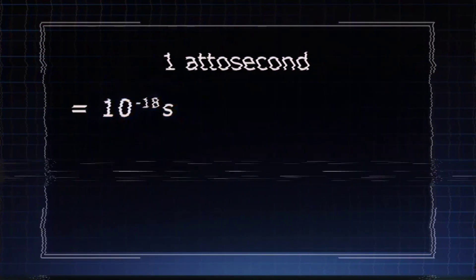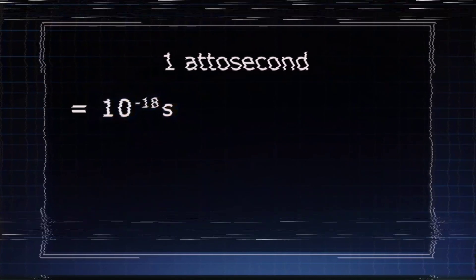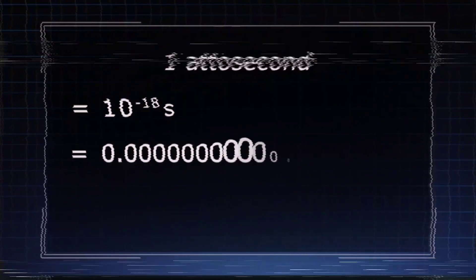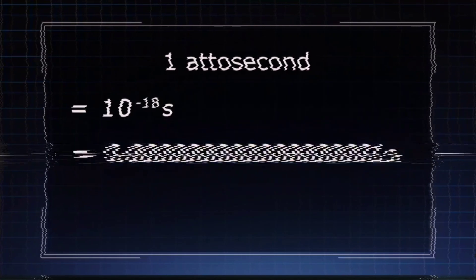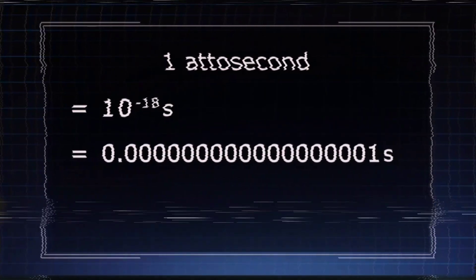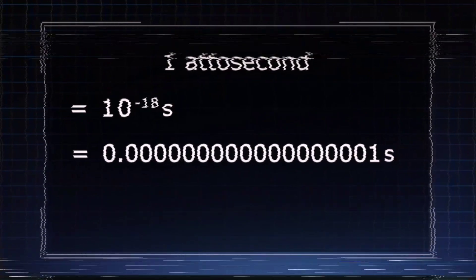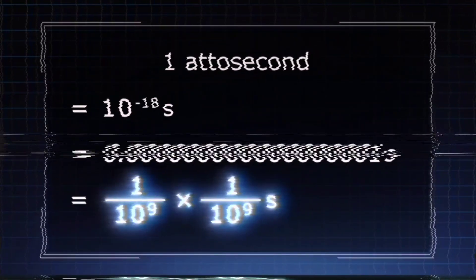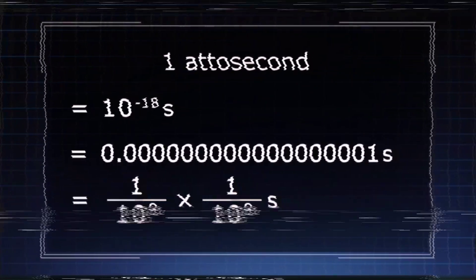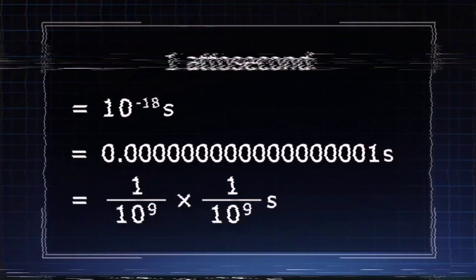What is attosecond? Attoseconds are the smallest unit of time, equivalent to one quintillionth of a second. One attosecond is equal to 10 to the power of minus 18 seconds. If we were to write this in the form of 0.00 and so on, we would need to write 18 zeros before the numeral one. This is equivalent to a billionth of a billionth of a second.